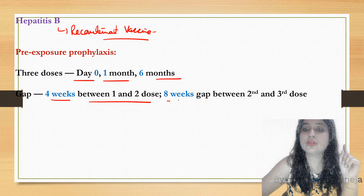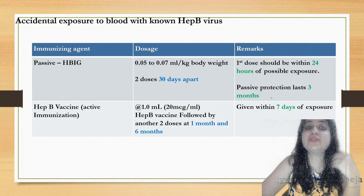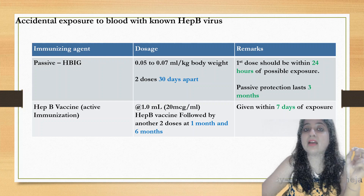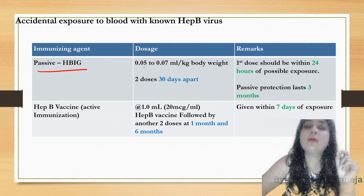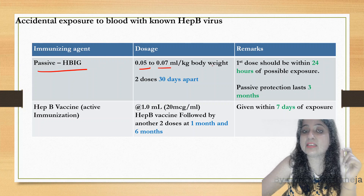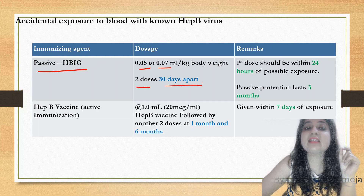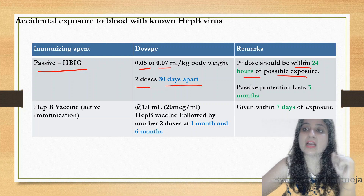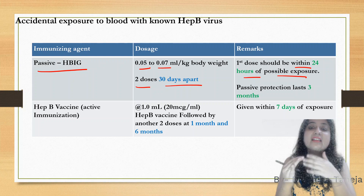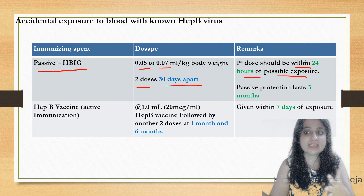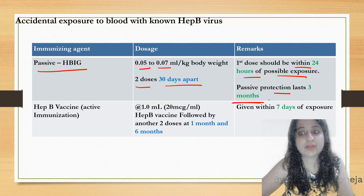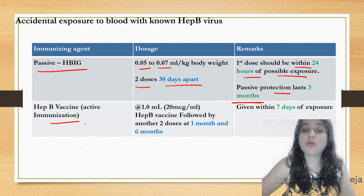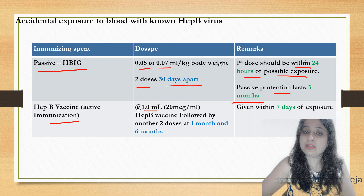Hepatitis B pre-exposure vaccination: three doses of the recombinant hepatitis B vaccine (made by DNA technology) — at 0, 1 month, and 6 months (four-week gap between dose 1 and 2; eight-week gap between dose 2 and 3). For accidental exposure to blood with known hepatitis B virus: give passive immunoglobulin 0.05–0.07 ml/kg body weight, two doses 30 days apart. First dose must be given within 24 hours of possible exposure. Passive protection lasts three months.